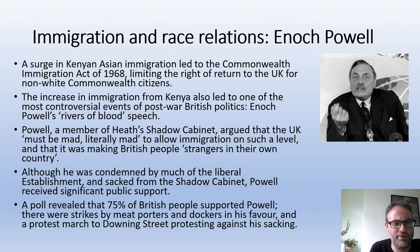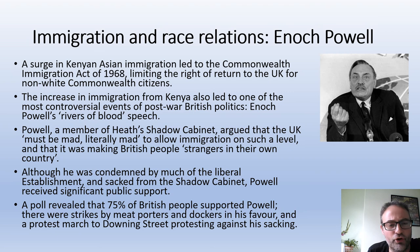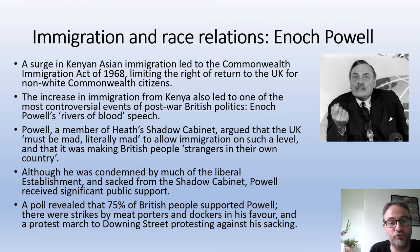Powell made a speech that became known as the Rivers of Blood speech. He referred back to the River Tiber in Rome, using analogies about the Tiber foaming with blood — a hugely powerful and pretty shocking speech. Powell said the UK must be literally mad to allow such immigration, and most controversially of all, that white British people now felt like strangers in their own country. In some quarters there was absolute horror. Many in his own Conservative Party disowned him, the Labour Party attacked him, and Heath sacked Powell from the Shadow Cabinet, calling his views entirely unacceptable.